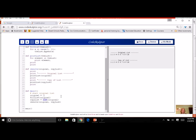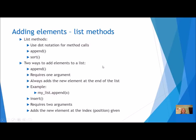Let's get back to the lecture about adding elements to our list. We already have been using some list methods — remember, methods use dot notation. The two we've been using so far are append and sort. There are two ways to add elements to your list. The first way is append — it requires an argument because you have to tell it what to append, and it always adds the new element to the end of the list. We've done append many times already, so it's mostly review.